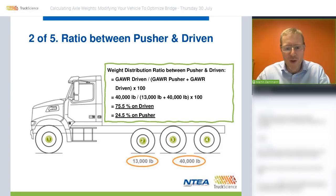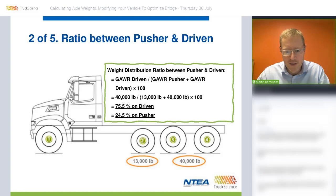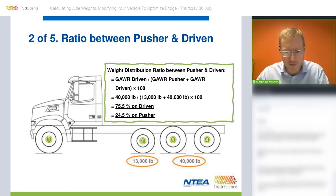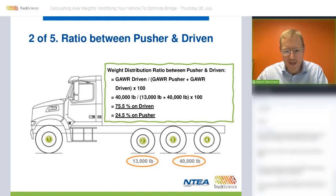In step two, we determine the weight distribution ratio between the pusher and driven axles. We want to establish how much of the weight carried by all the rear axles is carried by the pusher and how much by the driven axles, because it's not an even distribution — they have different carrying capacities and therefore pick up different loads. We do this by taking the 13,000 pounds on the pusher axle and the 40,000 pounds on the driven axles.